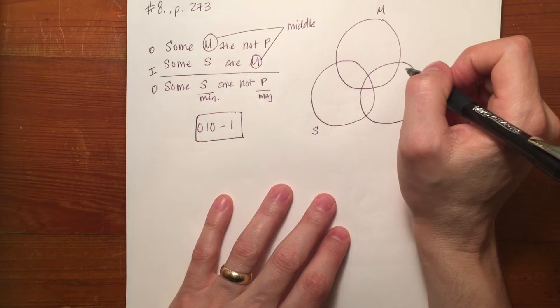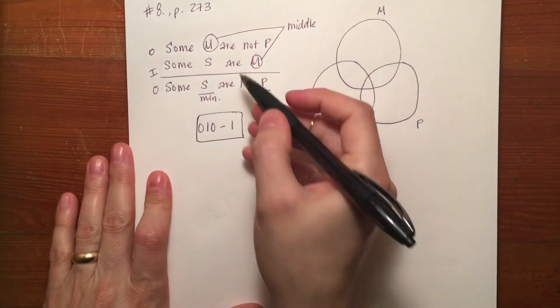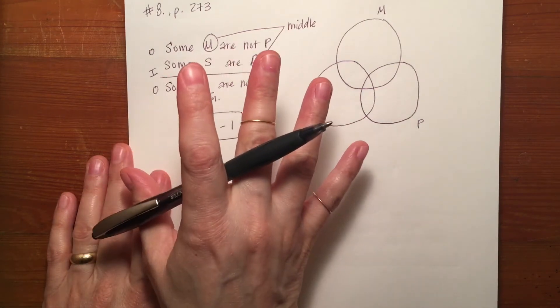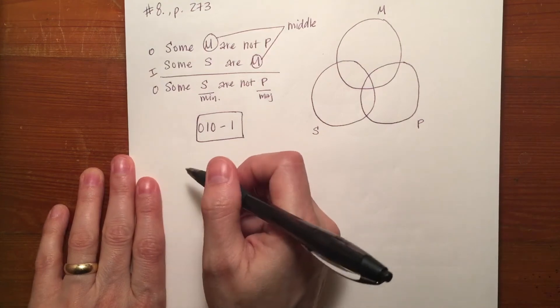But what we're concerned about here is how do we deal with two particular premises? So because they're both particular and one is not universal, we don't have to worry about which one to put in first. We can put in either one first. We just have to remember what the rules are.